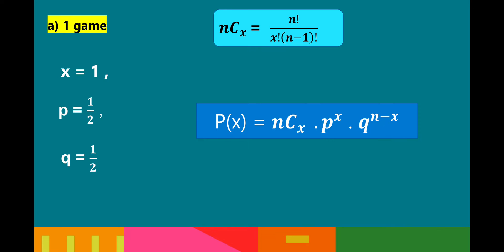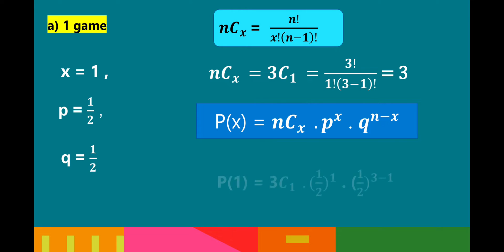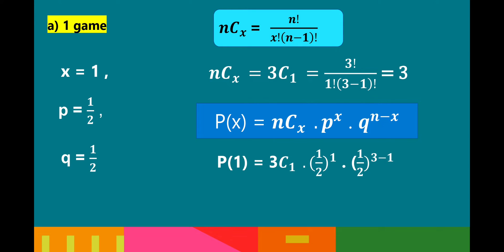For 1 game: x = 1. The combination of 3 at 1 is 3 factorial over 1 factorial times (3 minus 1) factorial, which equals 3. Using the binomial distribution: 3 times (1/2) raised to 1, times (1/2) raised to (3 minus 1). So (1/2) to the 1 is 1/2, and (1/2) raised to 2 is 1/4. Multiplying: 3 times 1/2 times 1/4 equals 3 over 8. Therefore, the probability for 1 game is 3 over 8.